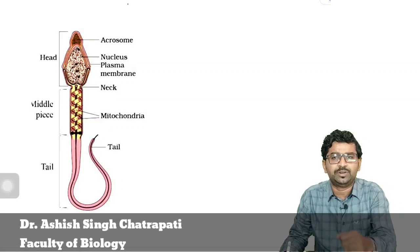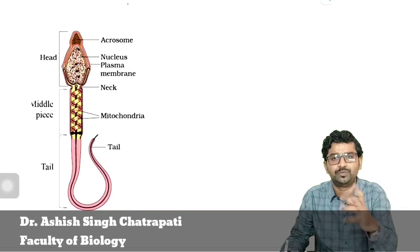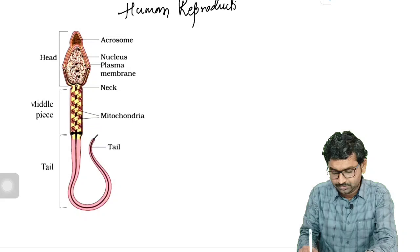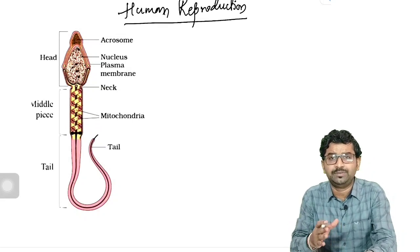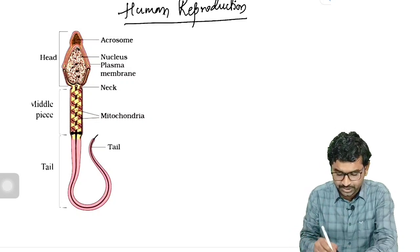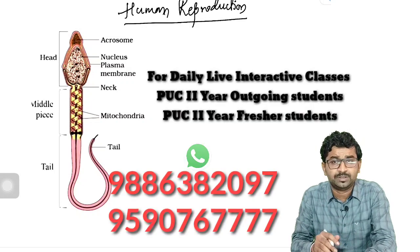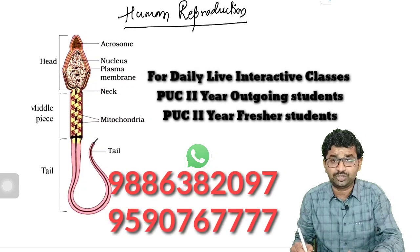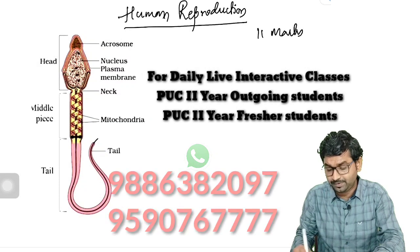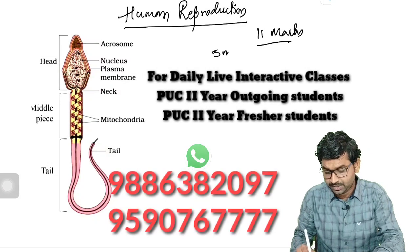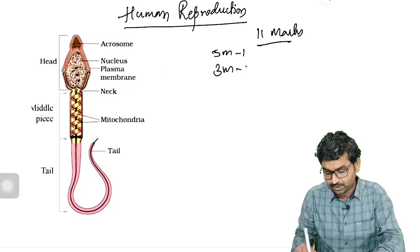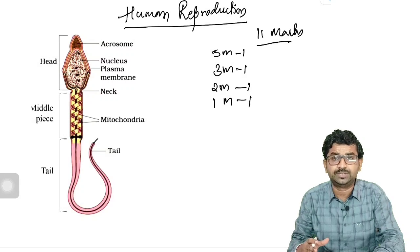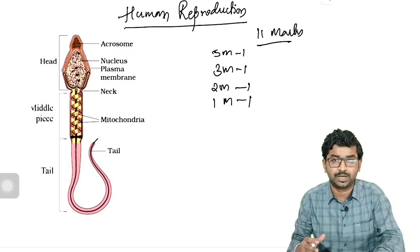Good morning students. In this video, we will discuss one important 5-mark question from the chapter Human Reproduction. As per the 70% syllabus, this chapter has a weightage of 11 marks — that is, one 5-mark question, one 3-mark question, one 2-mark question, and one 1-mark question. This is as per the latest released model question paper blueprint.